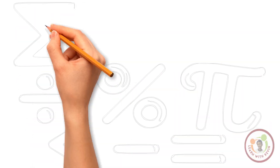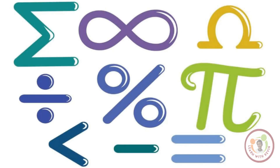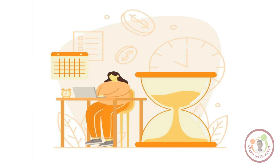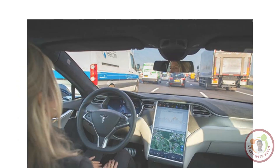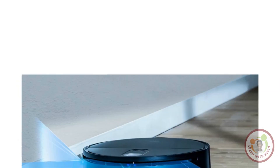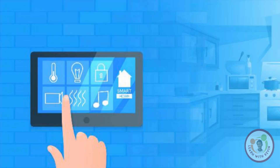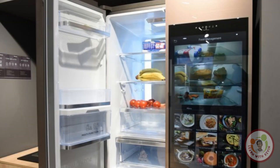What are the uses of computers? Initially, we used computers to perform only arithmetic operations like addition, subtraction, multiplication, and division. From doing arithmetic operations, computers are slowly evolving and now are doing smart work like driving a car, cleaning a house, playing songs or movies on the TV using voice commands, and home automation.